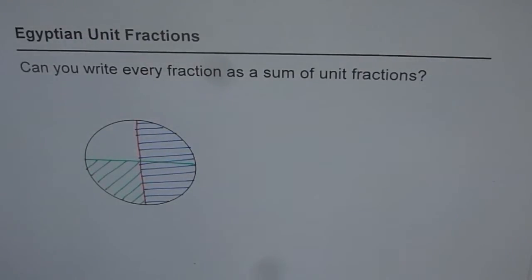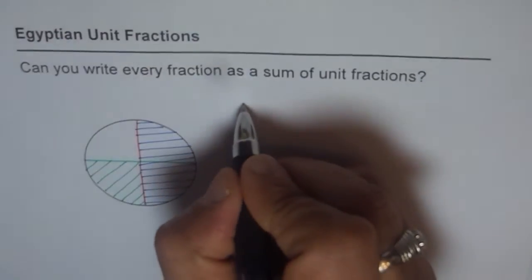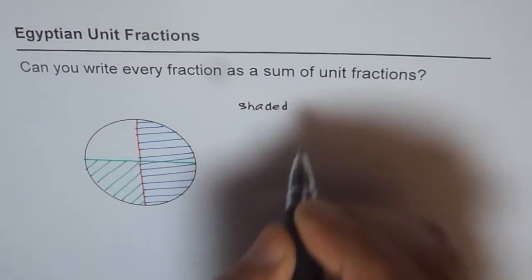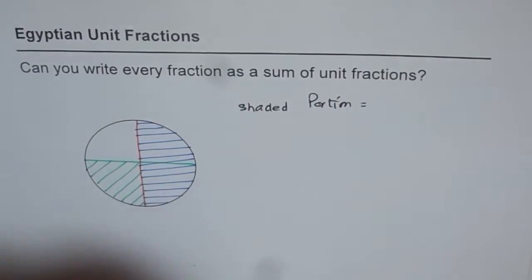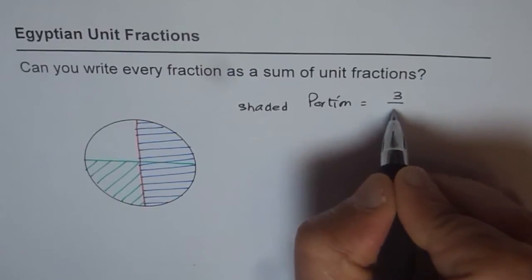So now what we see here is shaded portion is how much? So we find that the shaded portion is three-fourths, right? Three out of four are shaded.